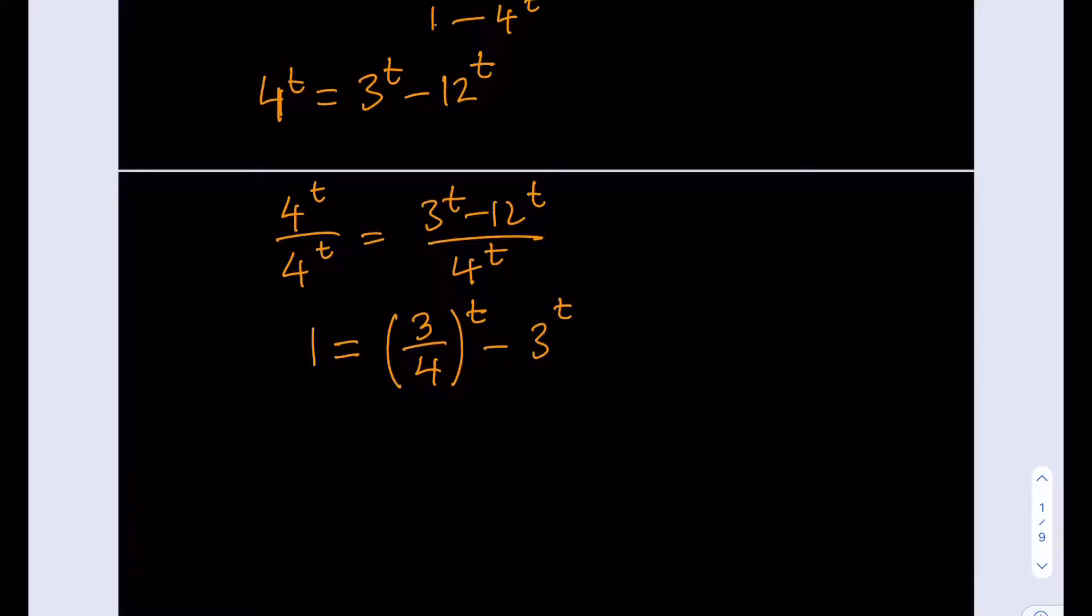Okay, in this form, this is not very helpful. So what I'm going to do is I'm actually going to isolate 3 over 4 to the power t. So I'm going to add 3 to the power t to both sides. So that's going to be 3 to the power t plus 1 is equal to 3 over 4 to the power t.